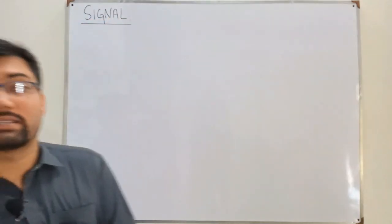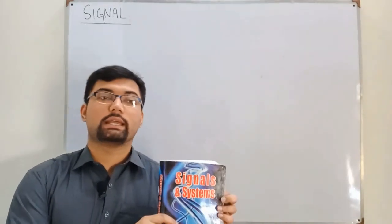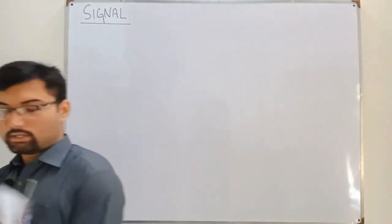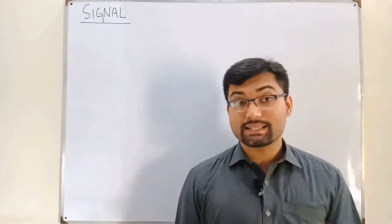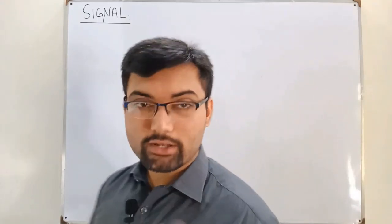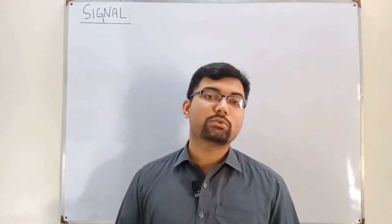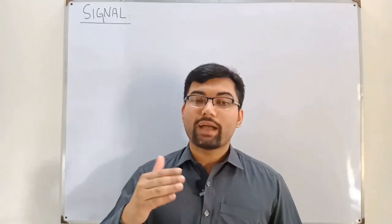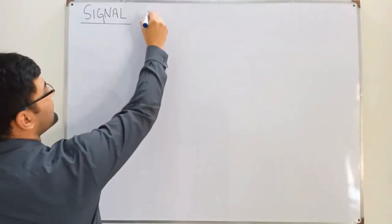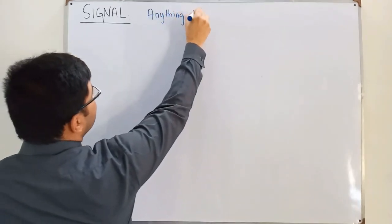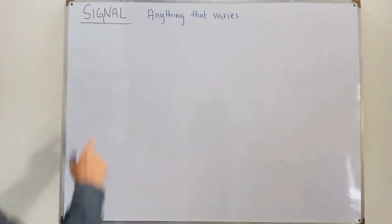I forgot to show you the book in the last video. This is the textbook by Oppenheim. So, what is a signal? A signal is anything that varies — something varies with respect to some other thing. As an engineering student, you will go into the mathematical definition of it. I'll write on the board: anything that varies.